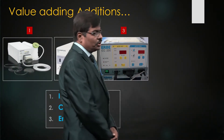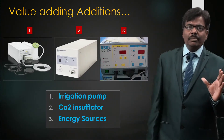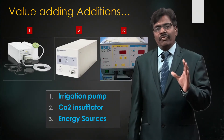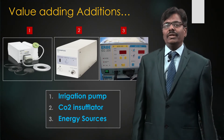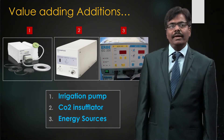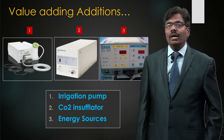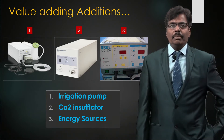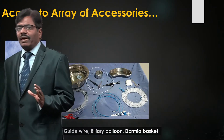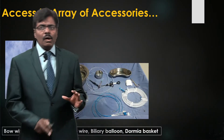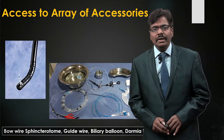Among the key equipment, the energy source — especially one capable of endocut — is very important. CO2 insufflation is optional but essential when using SpyGlass. Irrigation is also of immense help, especially when there is a problem with bleeding. Always train your staff to keep everything laid out neatly on a large trolley so you know exactly what you need.